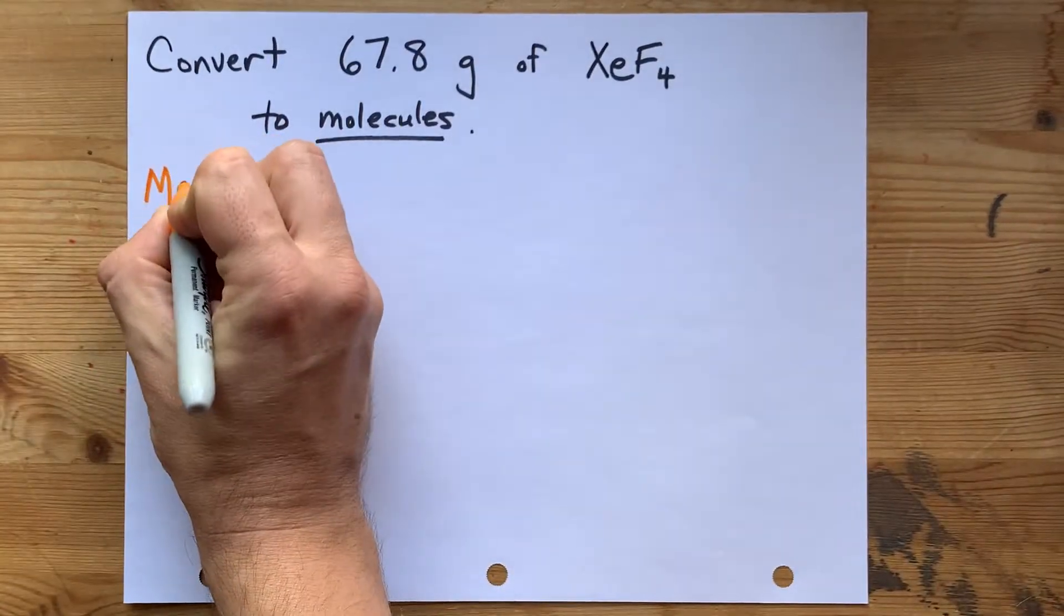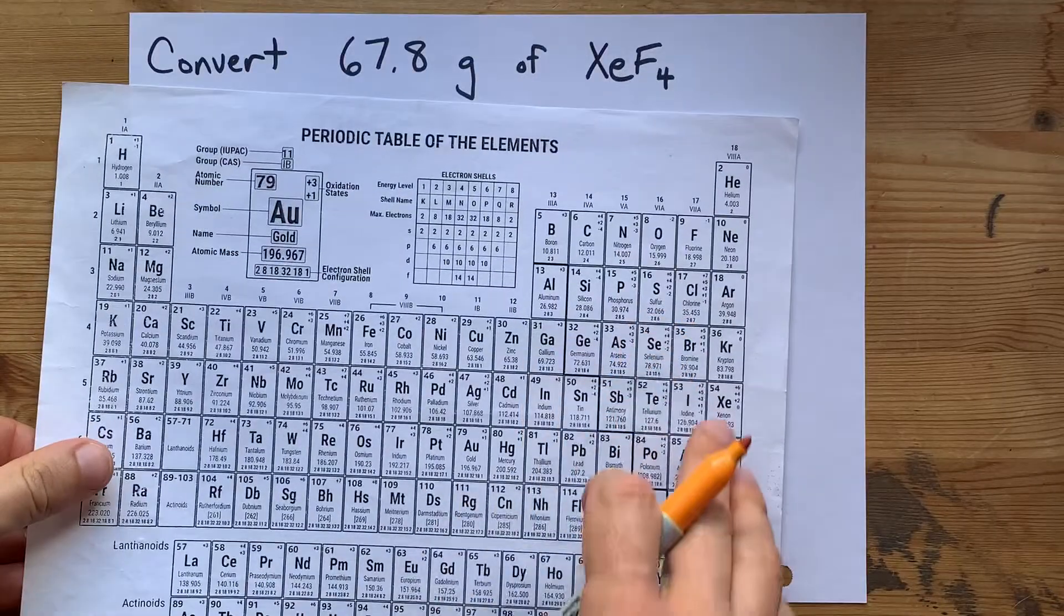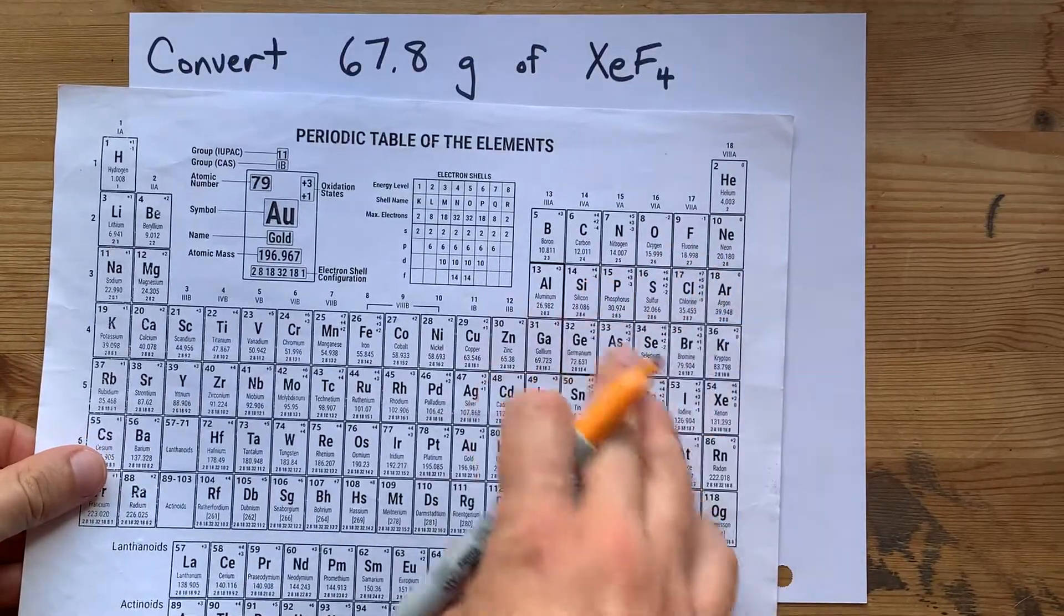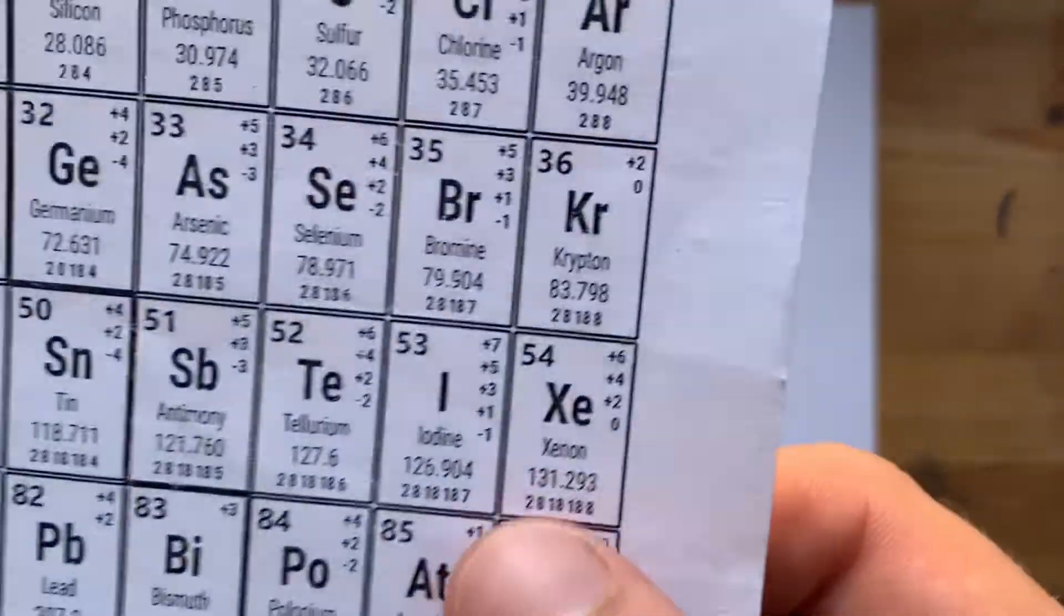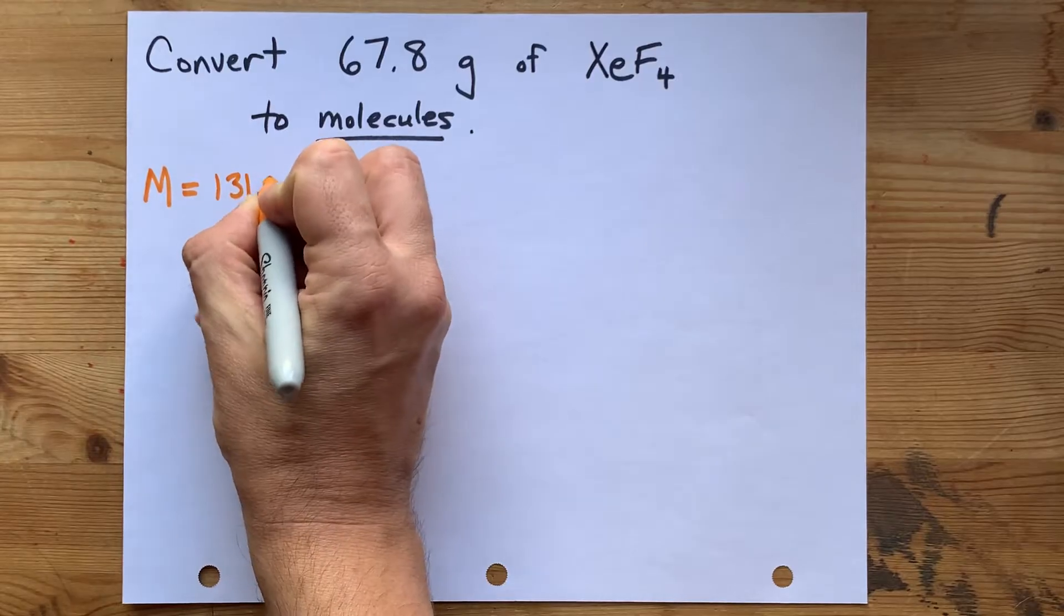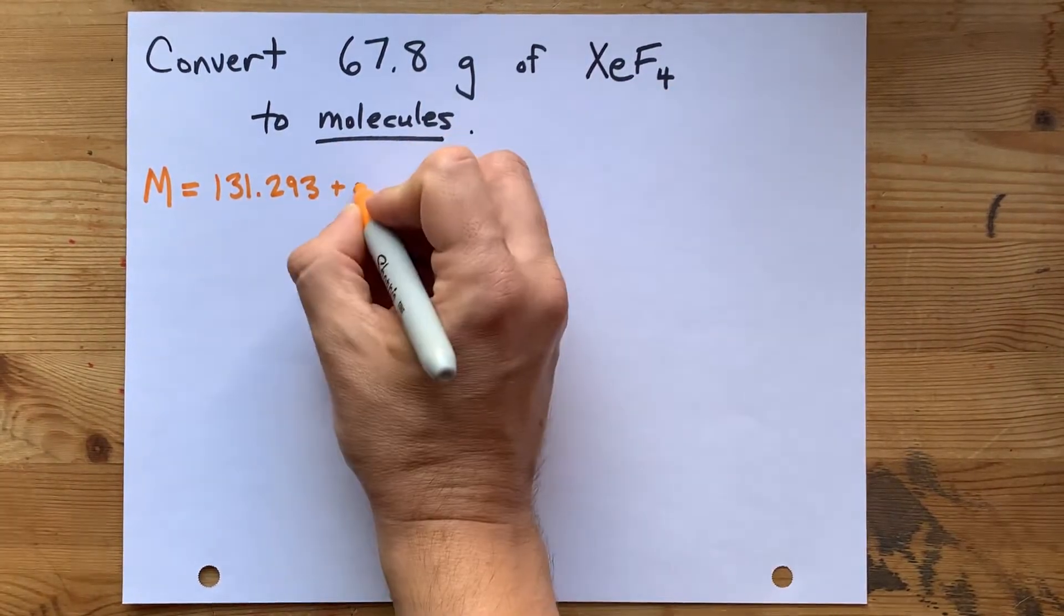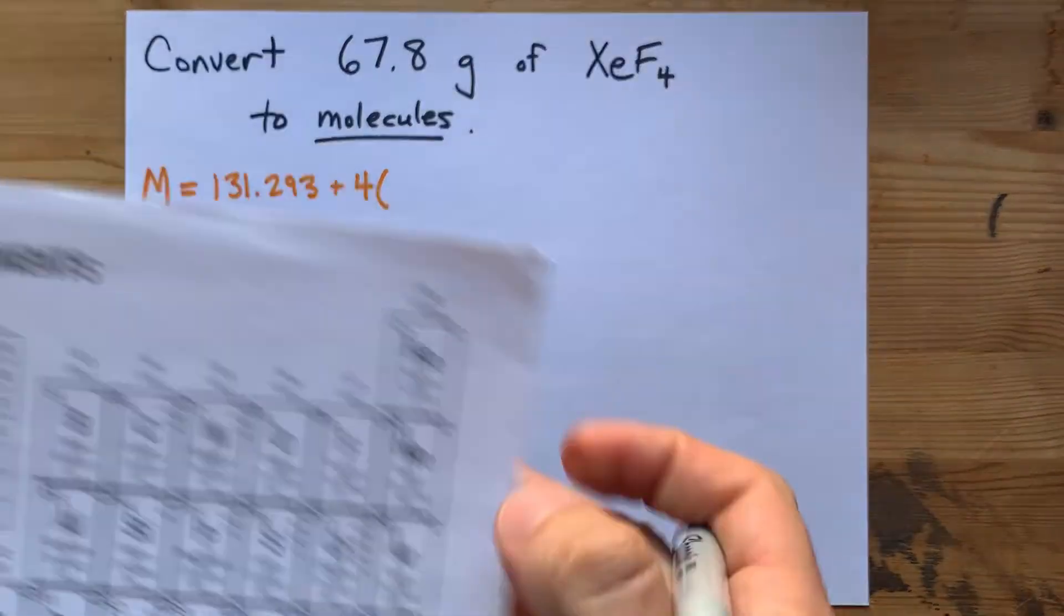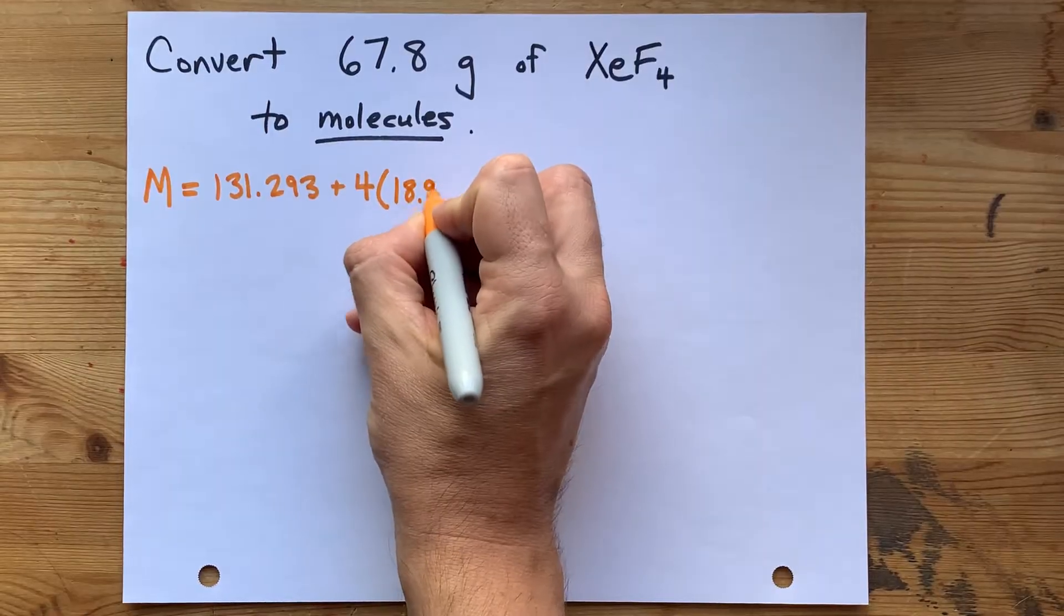Molar mass is written with a capital M, and you get it by adding up the atomic masses of each of the elements that make it up on the periodic table. According to this table, Xe weighs 131.293, and in this molecule, there are four fluorines. Each fluorine weighs 18.998.